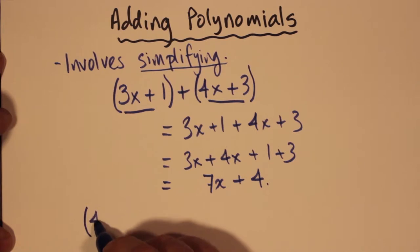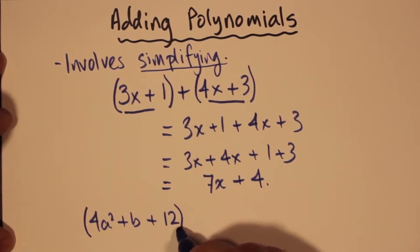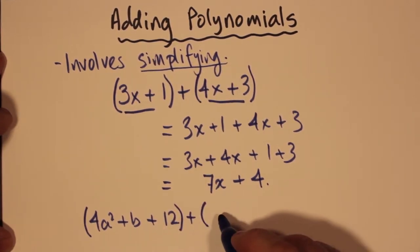This time I have polynomials where there's a squared term. So 4a squared plus b plus 12 is in one set of brackets, and we're adding that to another polynomial.